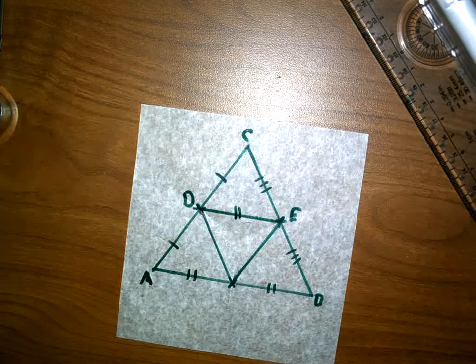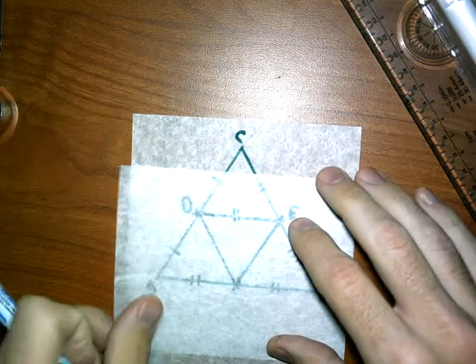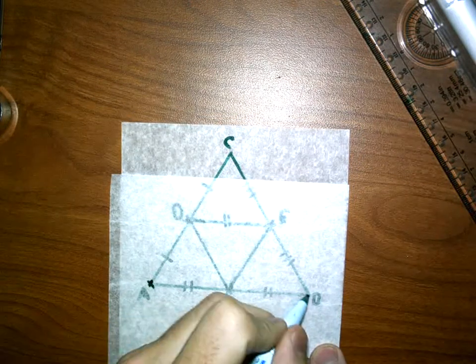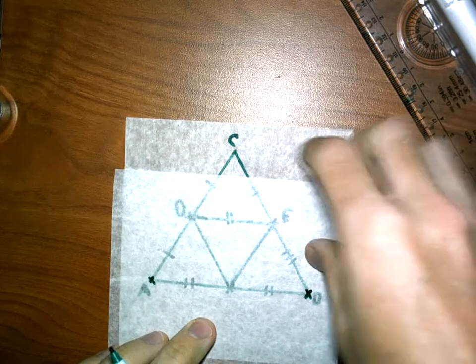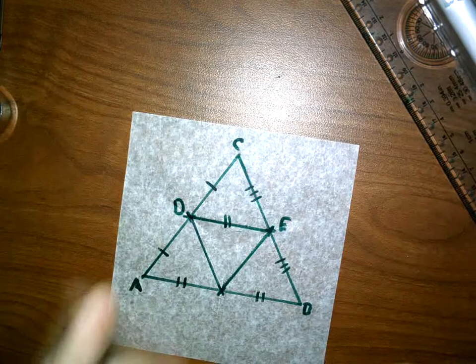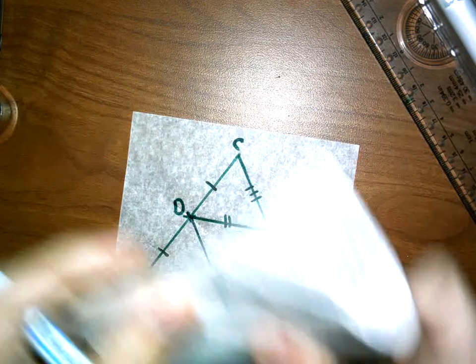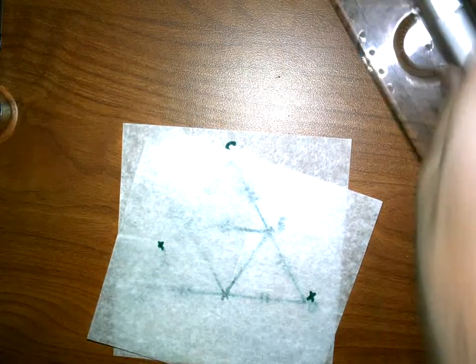Now, we can test this by using our other piece of patty paper. So I could come down and look maybe at AB, which is from here to here. Now, if I took my other piece of patty paper and folded that in half, again thinking midpoint, and pinched the paper, it gives me a new point.